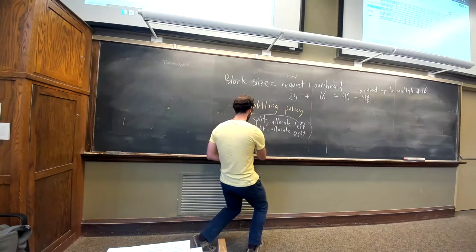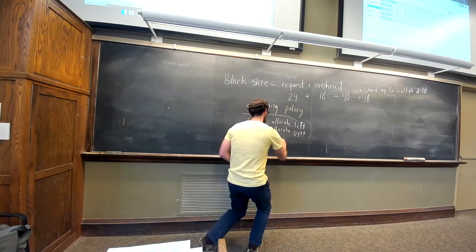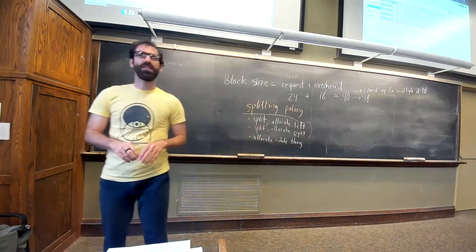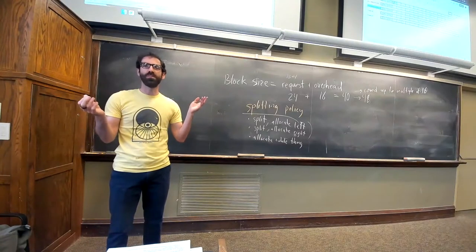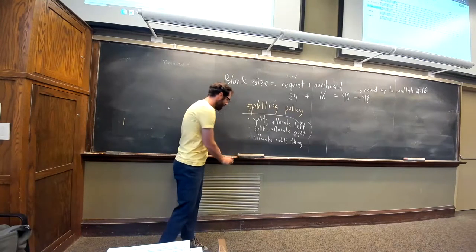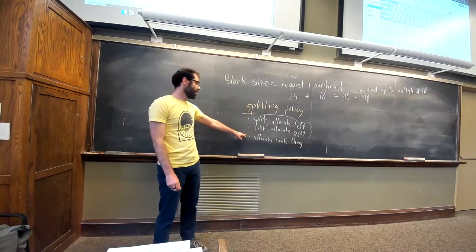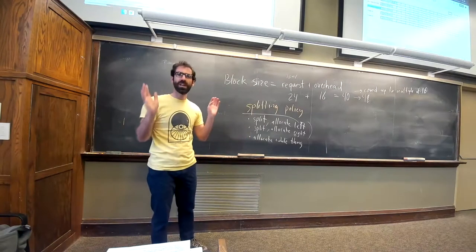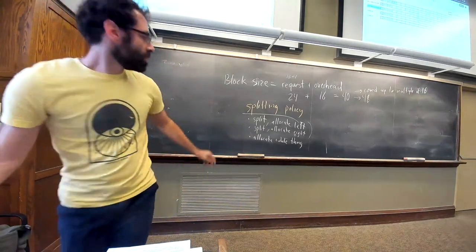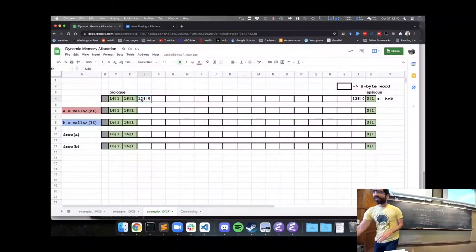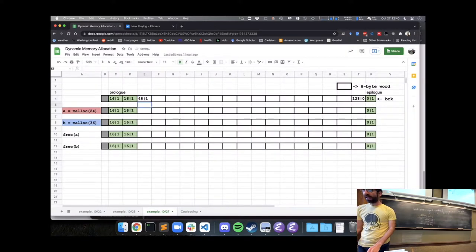We have another option: let's not do any work — just allocate the whole free block. The user gets more than they asked for, which doesn't hurt them. That would be another choice: not to split. We might have a condition like, if the amount we'd be splitting off is small enough, just allocate the whole thing. For the purposes of this example, let's split it and allocate the left-hand side, splitting this into something that's 48 and allocated.